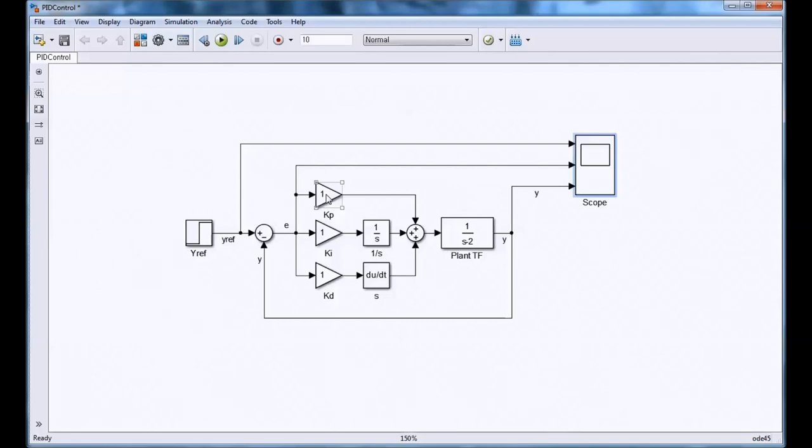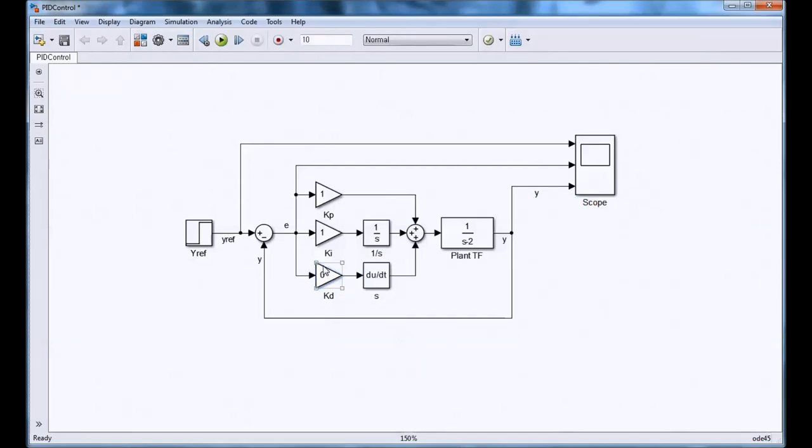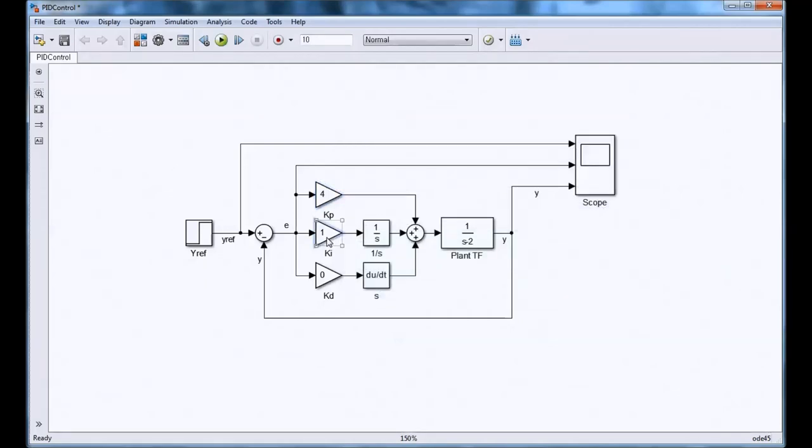So we have to now change our values. So if we look back at what we just derived, we found that KD had to be actually equal to zero. And what this means, also, is that we're actually not using the D part of this control. So it's actually just going to be a PI control. And our KP value here was four, and our KI value was one, actually. So we're good there. Let's see if just changing those values will make a difference in our system.